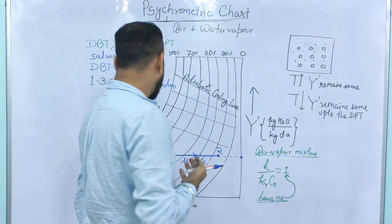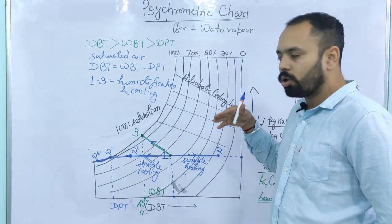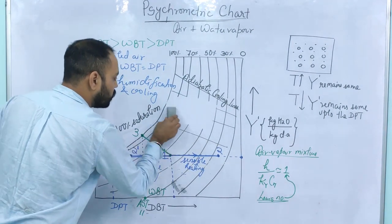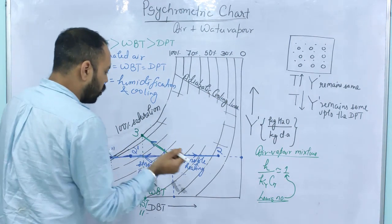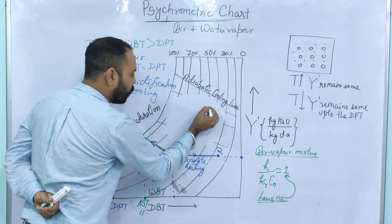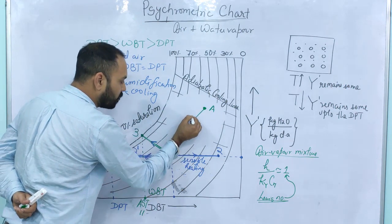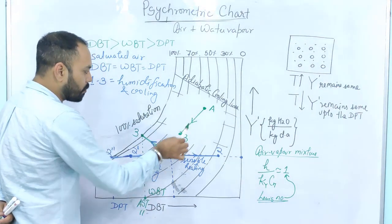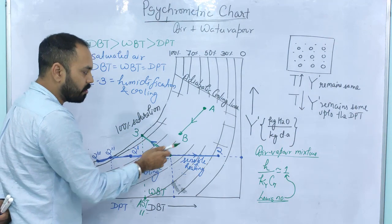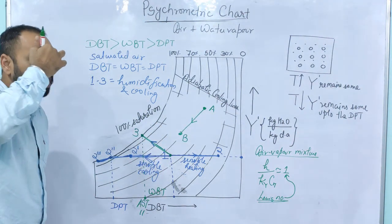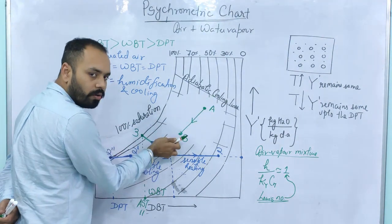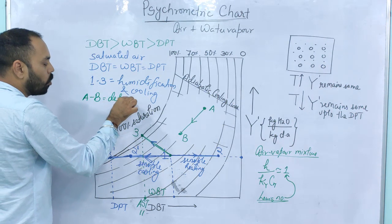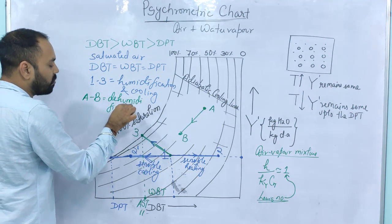You can think about how to show a process which is cooling and dehumidification. Suppose there is a line from point A to point B. The final temperature is less than the initial temperature — so this is cooling. The humidity decreases from A to B — so this is dehumidification. Therefore, the A to B process represents dehumidification and cooling. In this way, you can represent all processes on the psychrometric chart.